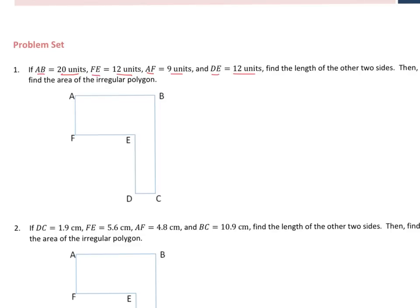So I want to label first, and I see AB is 20 units, and I'm going to use U to abbreviate. FE, which is right here to here, is 12, AF is 9, and DE is 12.